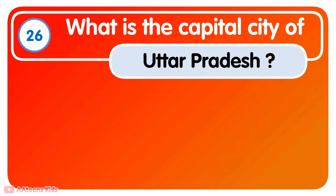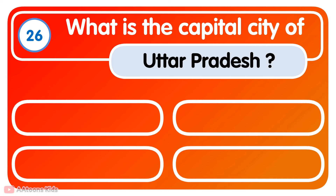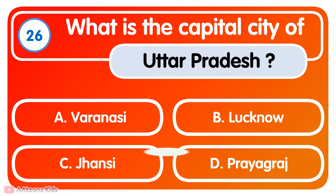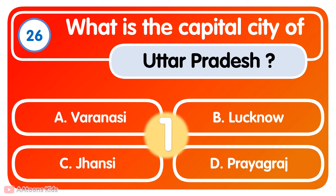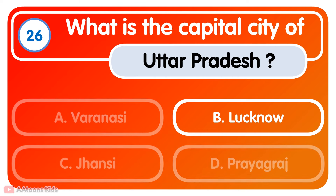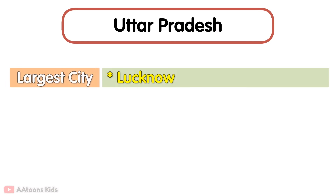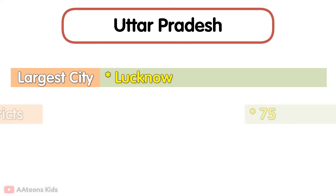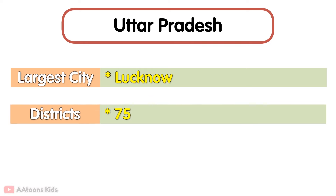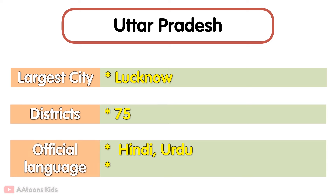What is the capital city of Uttar Pradesh? Lucknow. Lucknow is the capital city of Uttar Pradesh. The largest city in Uttar Pradesh is Lucknow. It has a total of 75 districts. Its official languages are Hindi and Urdu. Uttar Pradesh is the most populous state in India.